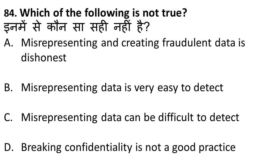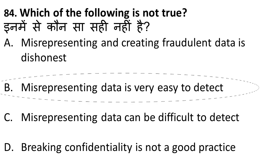Next question: which of the following is not true? Statement: misrepresenting and creating fraudulent data is dishonesty — correct. Statement C: misrepresenting data can be difficult to detect — also correct, because it is very difficult to detect misrepresentation in a large database. The incorrect statement would be: misrepresenting data is very easy to detect — it is NOT easy. It is a tedious process to prove wrongdoing. So the correct answer is the statement saying misrepresentation is easy to detect.